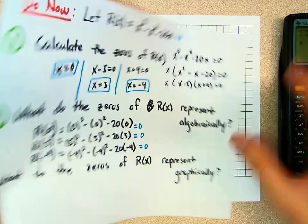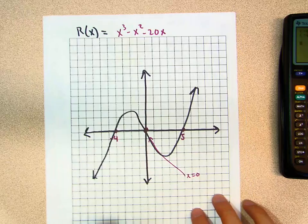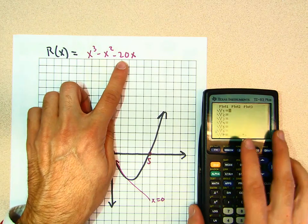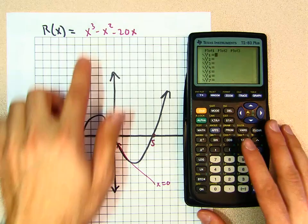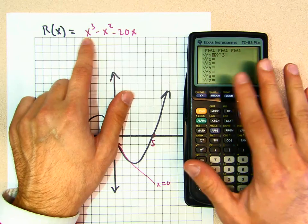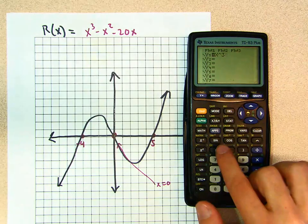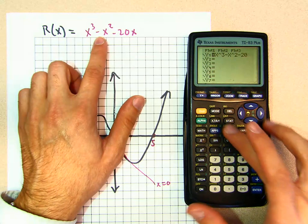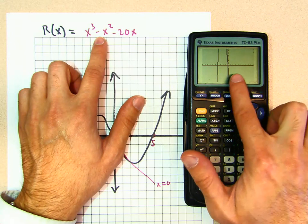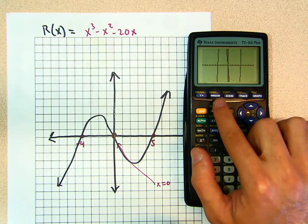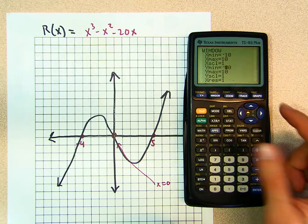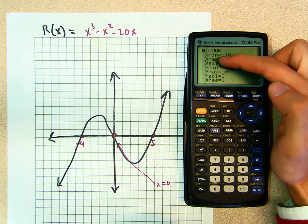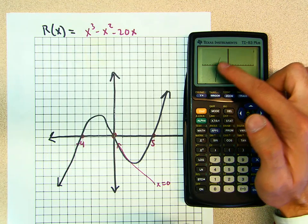What do the zeros mean graphically? If this is our graph — if I plug x cubed minus x squared minus 20x into the calculator, I want you to do this with me, take the calculator and do every step. I enter x cubed minus x caret 2 minus 20x. When I graph it, it doesn't show me everything. What I want to do is adjust my window — go to y min, make it negative 50, and y max positive 50. I'll explain what y min, y max, x min, x max do. But if I hit graph, notice how the graph looks a lot nicer.